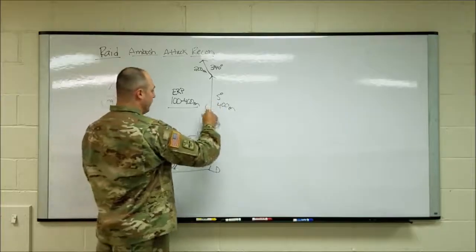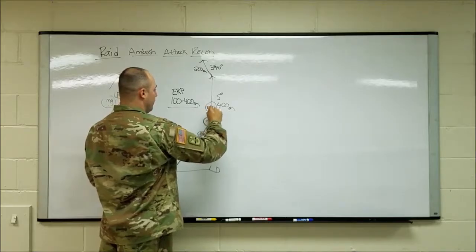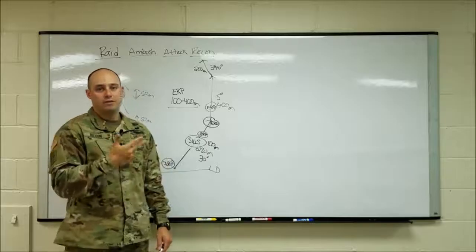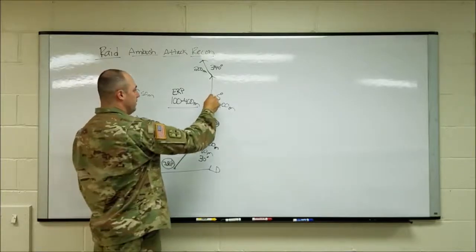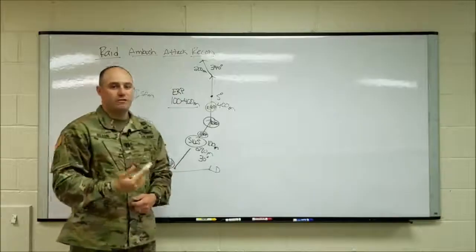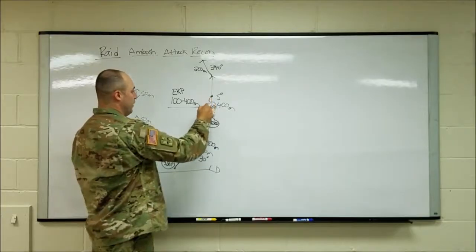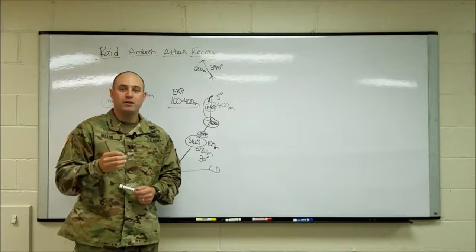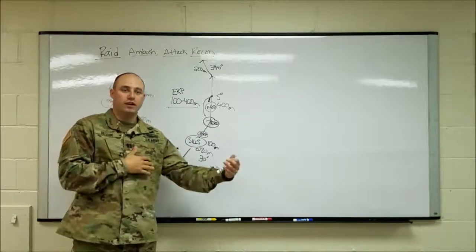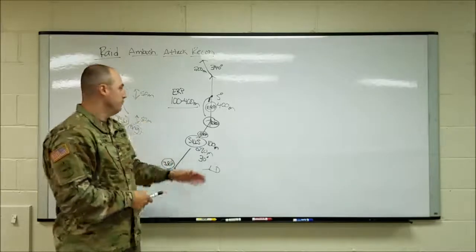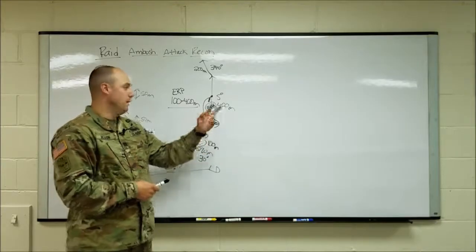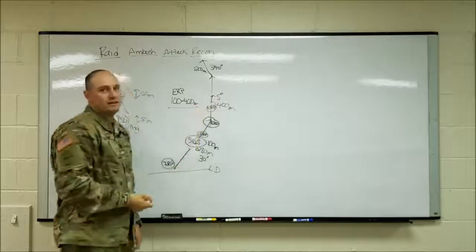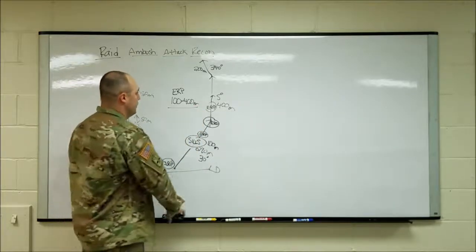As we're moving and making en-route rally points along the way, one important SOP to note: you do not fall back to your last en-route rally point — you fall back to the one behind it. This comes from the old doctrine in FM 7-8. If I'm 25 meters forward of a rally point and take contact, moving back only 25 meters is probably not sufficient to break contact. So falling back to the rally point behind is much safer.